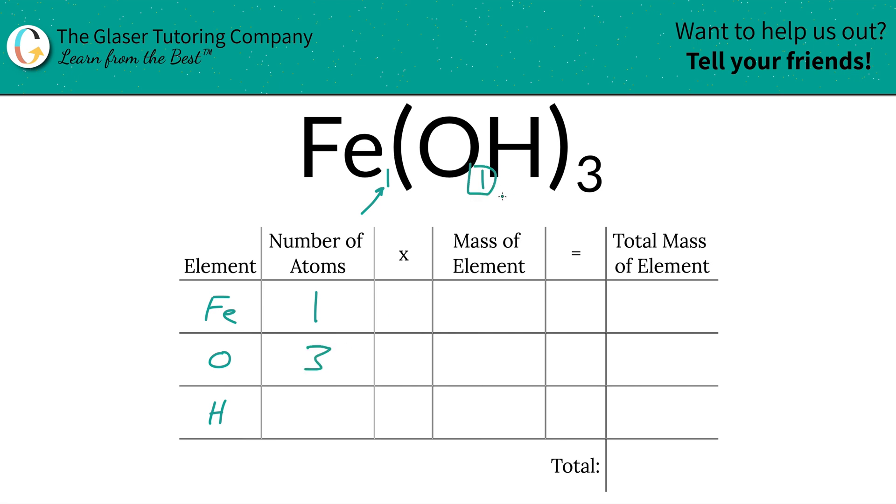The other way to look at it is to take the inner subscript and multiply it by the outer subscript to find the total of that particular atom. Same thing for hydrogen. You got one hydrogen, you multiply it by the outer subscript, three, and so you have three hydrogens. Easy peasy.